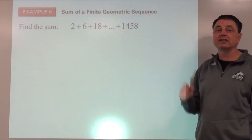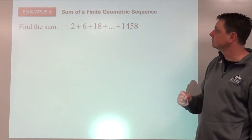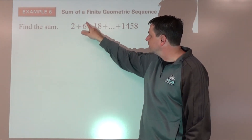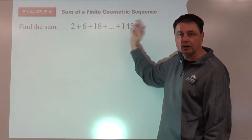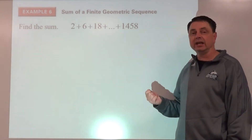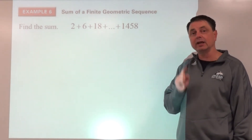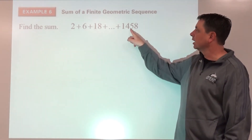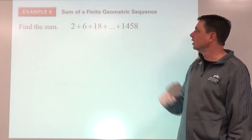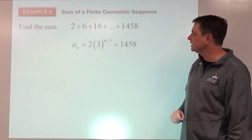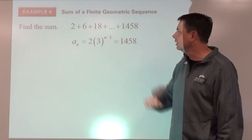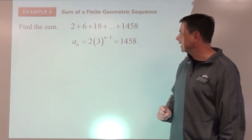Example six: find the sum of a geometric sequence. Multiplied by 3 each time — that's how we know it's geometric. We don't know n, so we use the a-sub-n formula: 1458 equals a-sub-1 times r to the n minus 1. Solving for n: divide both sides by 2. We can use a log equation — rewrite with the base, dropping n minus 1 down, giving log base 3 of 729.